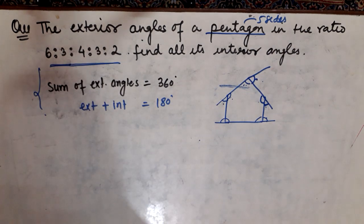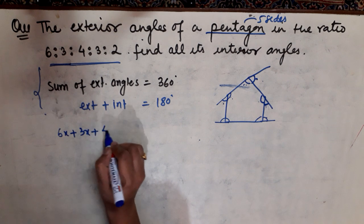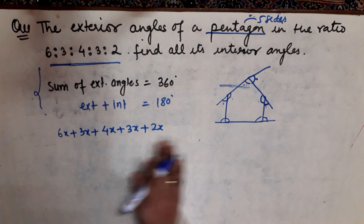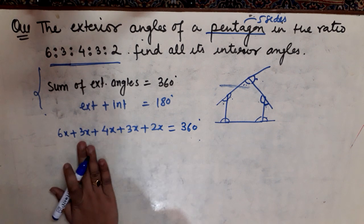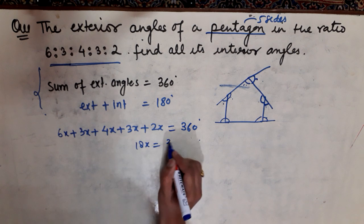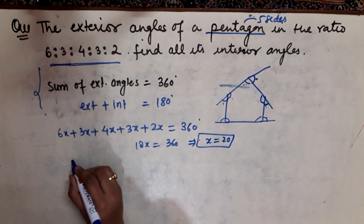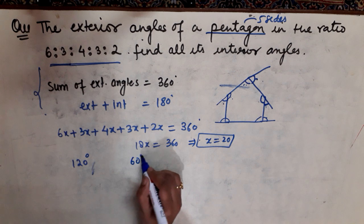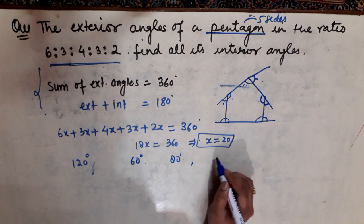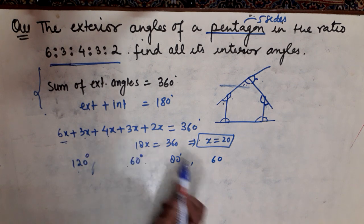The exterior angles of the pentagon are in a ratio, so convert them into numbers as 6x, 3x, 4x, 3x, and 2x. All five angles sum to 6x + 3x + 4x + 3x + 2x = 18x. Since the sum of exterior angles equals 360, we get 18x = 360, so x = 20. Therefore the exterior angles are 120°, 60°, 80°, 60°, and 40°.